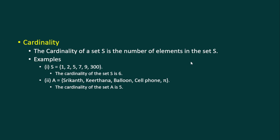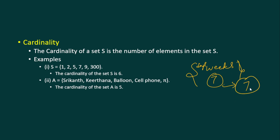The cardinality of a set is the number of elements in it. For the set of days of the week, there are seven days, so the cardinality is seven. A set containing the numbers one, two, three, four, five, six has six elements, so its cardinality is six. Another set with five items has a cardinality of five.